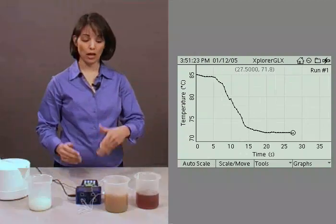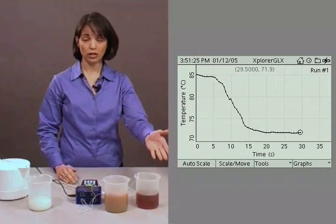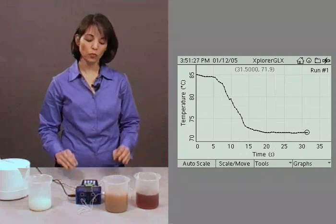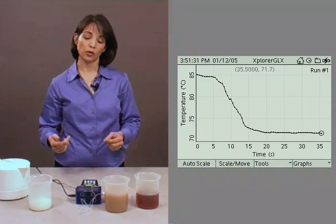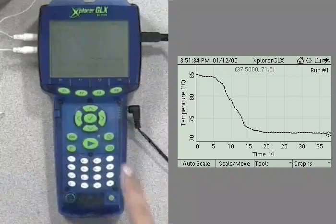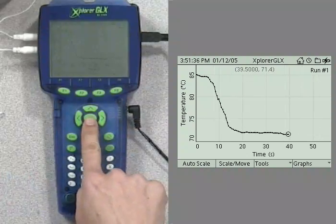And I know what you're thinking now. You're saying, what about the temperature in container 2? How do we see that? Well, you can change the data that's displayed on the graph display. And you do that by pushing the giant check mark in the middle of the GLX.